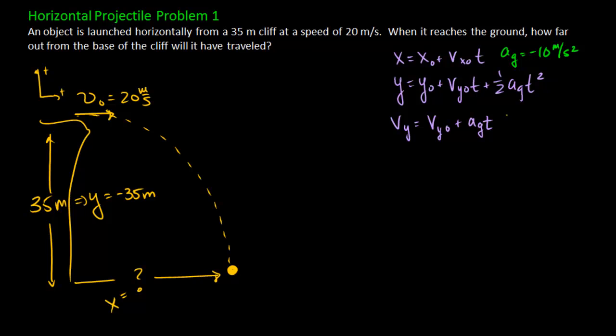So all the initial velocity is actually in the x direction and none of it is in the y direction. So we can say that our initial velocity in the x direction is 20 meters per second. And our initial velocity in the y direction is actually zero, which we'll see makes this problem a lot easier.